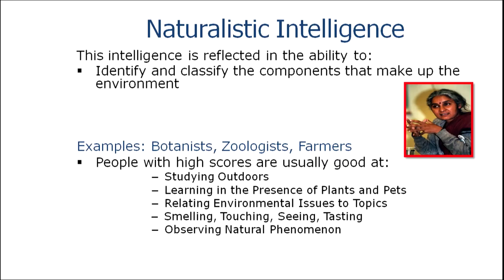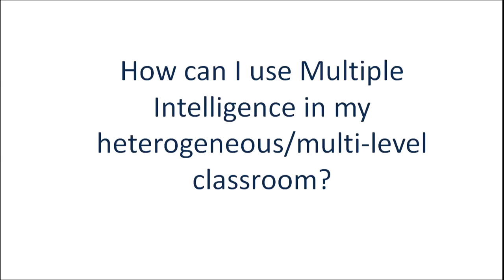The last type of intelligence Howard Gardner described is naturalistic intelligence — the ability to identify and classify the components that make up the environment. Botanists, zoologists, and farmers generally score high on naturalistic intelligence. As a teacher, I can use the concept of multiple intelligence by planning different kinds of activities that cater to visual, musical, and kinesthetic aspects, including going outdoors. By using these different kinds of activities, I cater to the different intelligences found in my classroom.